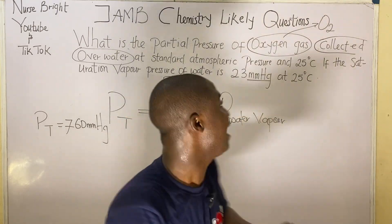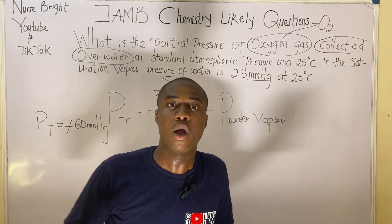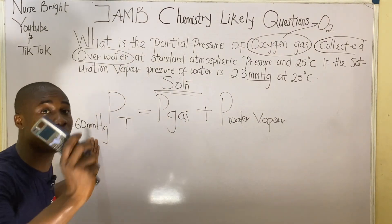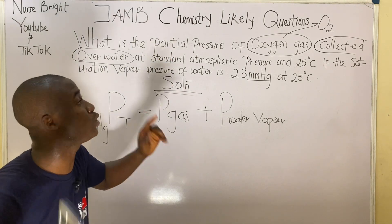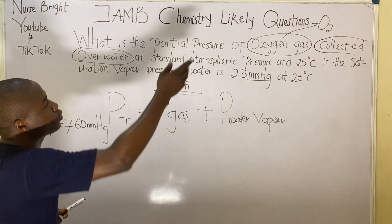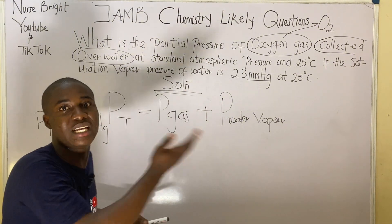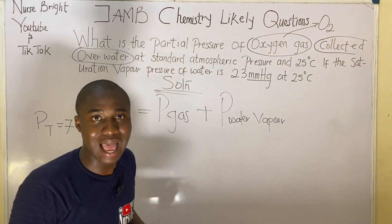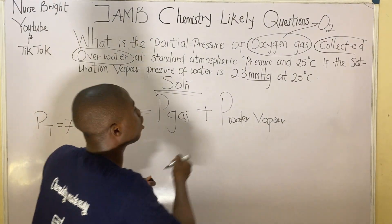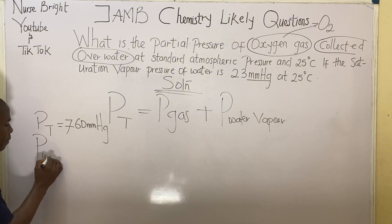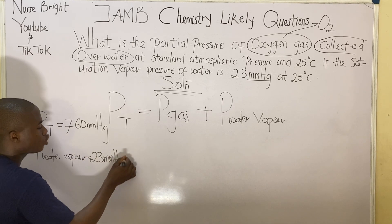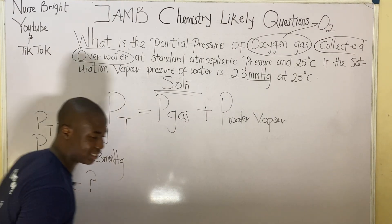Note that in other exam questions, they may not use the phrase 'standard atmospheric pressure' but instead give you a specific value directly. Also, the temperature (25°C) is not used in this calculation. The saturation vapor pressure of water is given as 23 mmHg, so P_water_vapor = 23 mmHg.